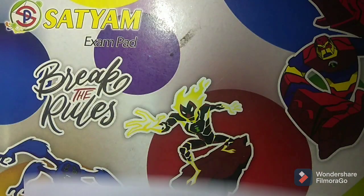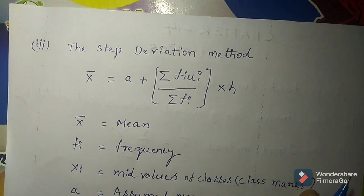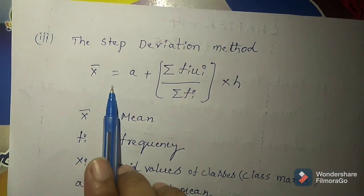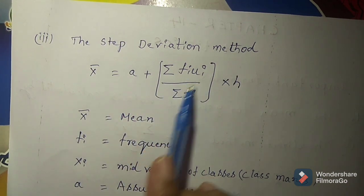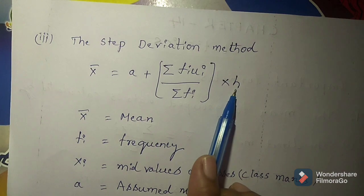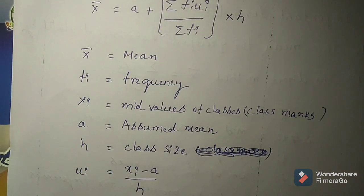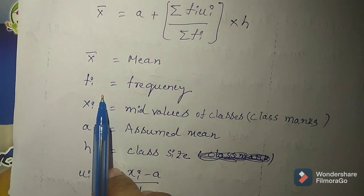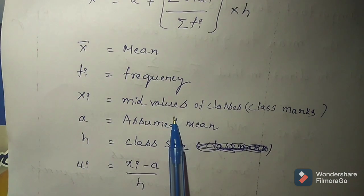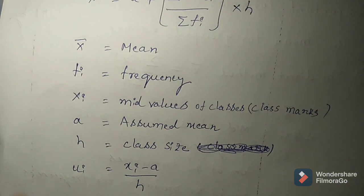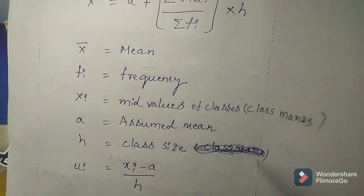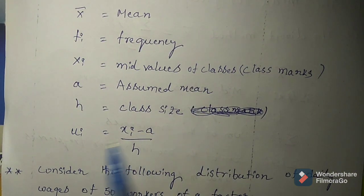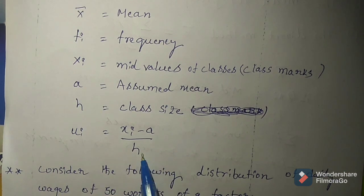Then the third method is the step deviation method. The formula is: x̄ equals a plus sigma fi ui by sigma fi into h. Then explain each term: x̄ means mean, fi means frequency, xi means mid values of classes or class marks, a means assumed mean, h means class size, and ui equals xi minus a by h.